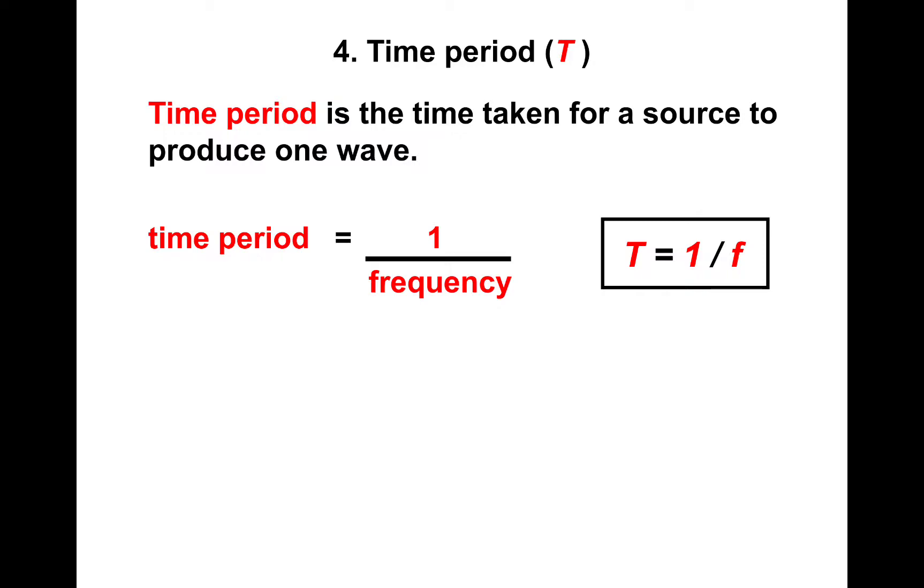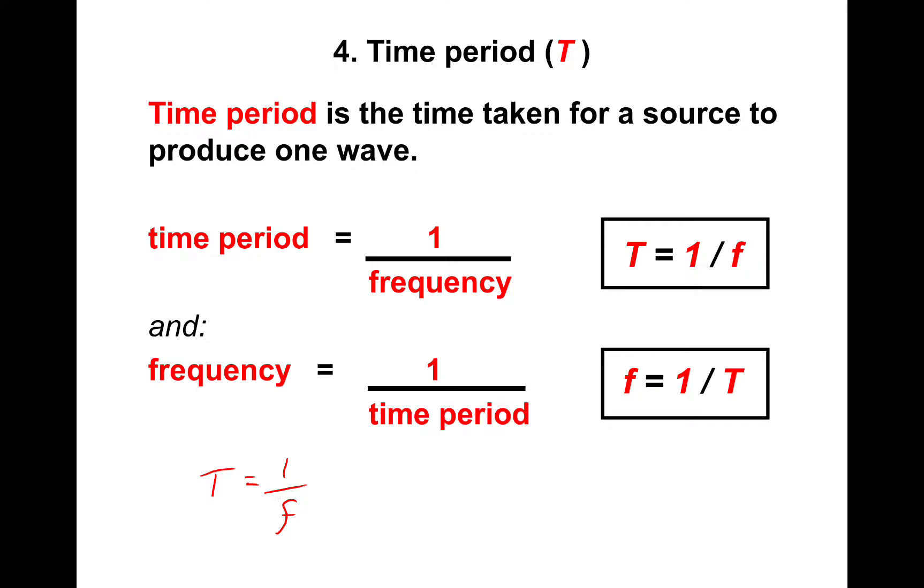And if you want to try you can pause the video and try and rearrange to find frequency. So the frequency equals one divided by the time period. Now if you're not sure how to do that, if you've got T equals one divided by F, what you need to do is multiply by F on both sides. So that takes the F up so you end up with T times F equals one. And then we need to get frequency on its own so we need to divide by T on the right hand side. That's where frequency equals one divided by T comes from.